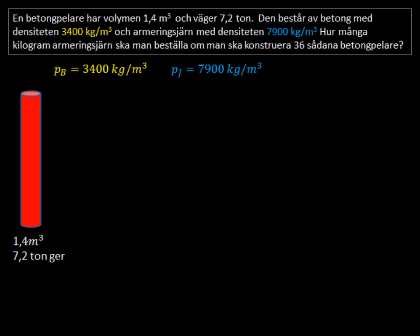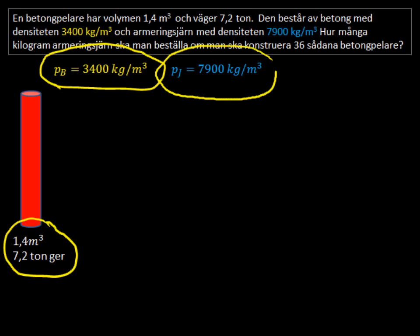So we have a column, and we know some things about it. We're given this. And when you solve these kinds of problems, draw a picture. Then write down what you know. Okay? We are given this, and I want you to use units. It's very important. Use the proper symbols, too.